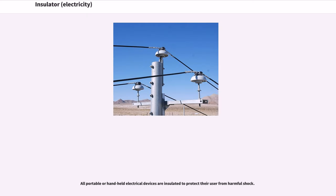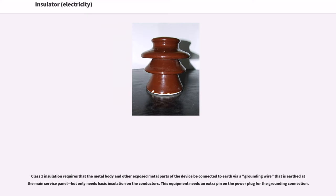All portable or handheld electrical devices are insulated to protect their user from harmful shock. Class 1 insulation requires that the metal body and other exposed metal parts of the device be connected to earth via a grounding wire that is earthed at the main service panel, but only needs basic insulation on the conductors. This equipment needs an extra pin on the power plug for the grounding connection.